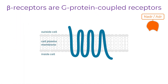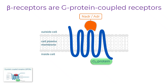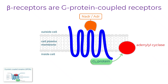Beta-adrenergic receptors are G-protein-coupled receptors. These receptors couple to the stimulatory G-protein, Gs. When noradrenaline or adrenaline bind to the receptor, the Gs protein is activated and in turn stimulates the enzyme adenyl cyclase. This enzyme catalyses the conversion of ATP into cyclic AMP. Cyclic AMP acts as a second messenger, triggering cellular changes that produce the physiological effects of noradrenaline and adrenaline.